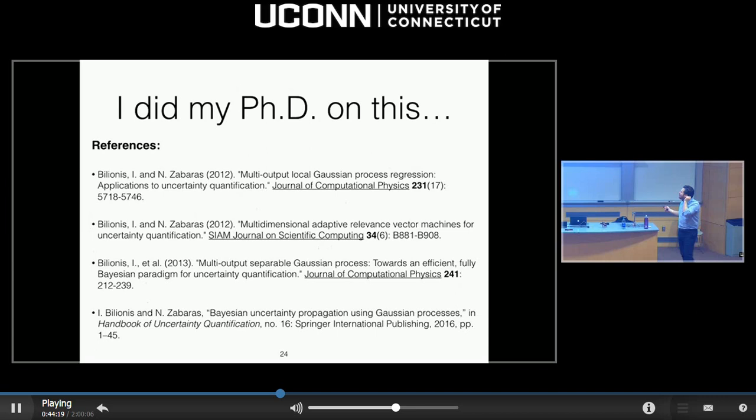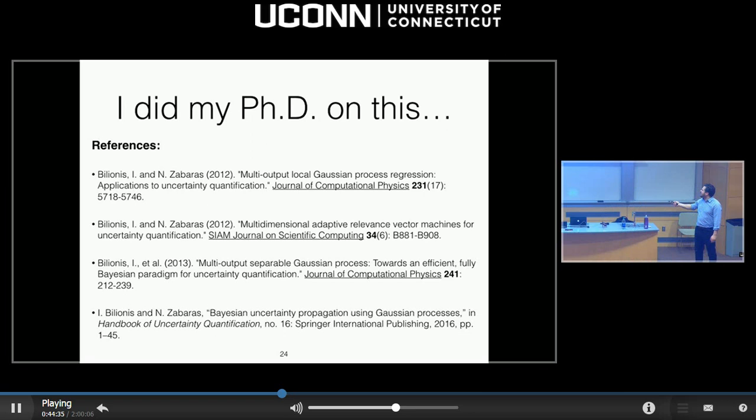The take-home message: if you want to do uncertainty propagation seriously on a very expensive model, there is a way to do it — be fully Bayesian. The best reference for my work would be a book chapter that describes in more mathematical form what I just talked about.